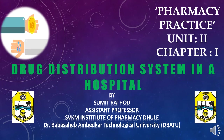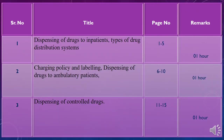Before moving forward, we need to discuss the learning objectives for the current topic. The learning objectives are divided into three important components. In the first component, we will discuss dispensing of drugs to the inpatient pharmacy and types of drug distribution systems. In the second component, we will discuss charging policies, labeling policies, and dispensing of drugs to the ambulatory or OP patient. In the third segment, we will discuss the dispensing of controlled drugs.